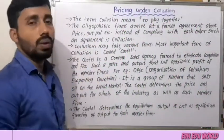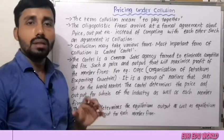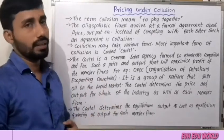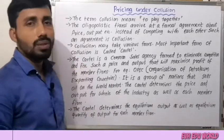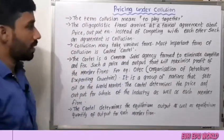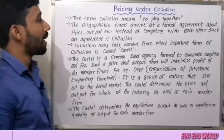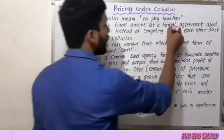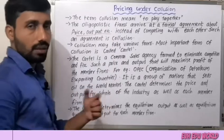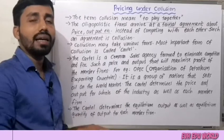Pricing under collusion. In the case of collusion, the term collusion means to play together. In the case of collusion, an oligopoly firm arrives at a formal agreement about price, output, etc. The oligopoly firms make a formal agreement on price and output.